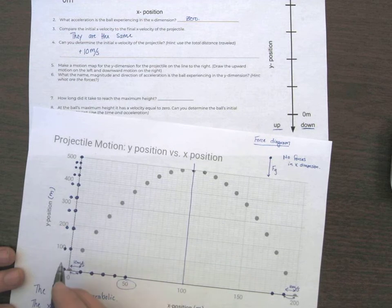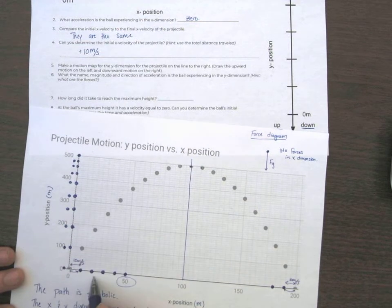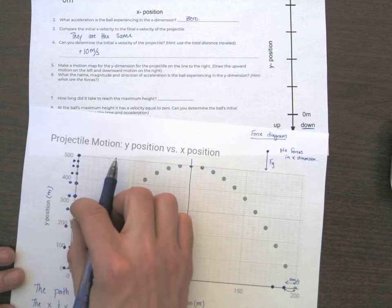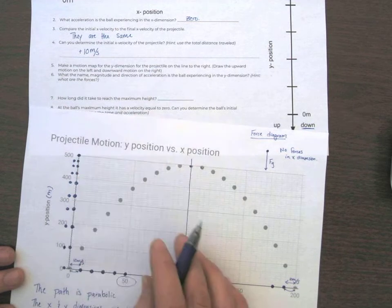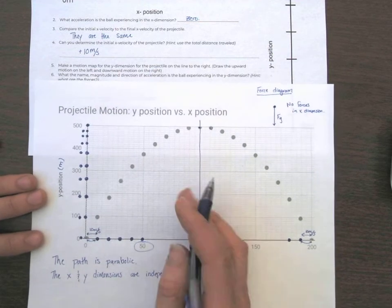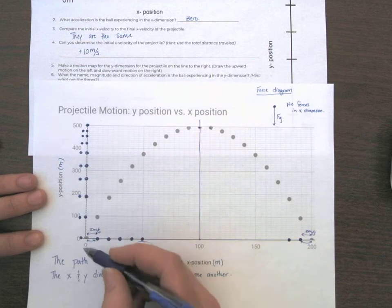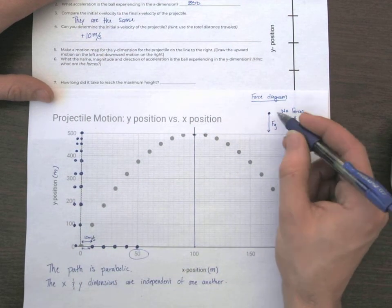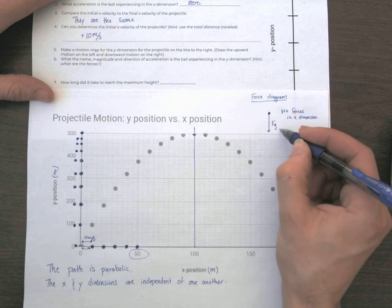So notice this doesn't look, this going up doesn't look a lot like this. This one, they're very evenly spaced. Here, as you go up, they gradually are getting closer and closer together. And then when you go down, they're gradually getting more and more spread apart. That fits with our force diagram, that there is acceleration in the y-axis. Look at this net force we have, force of gravity.